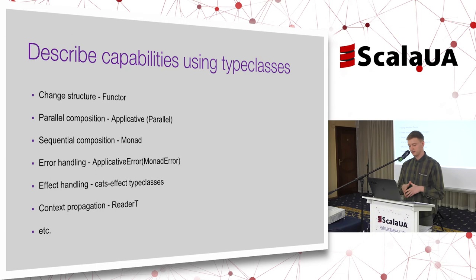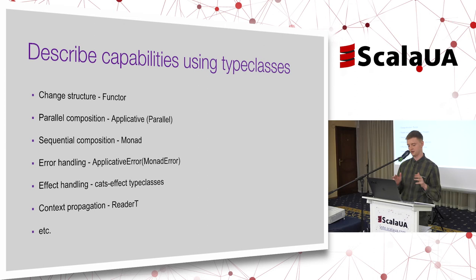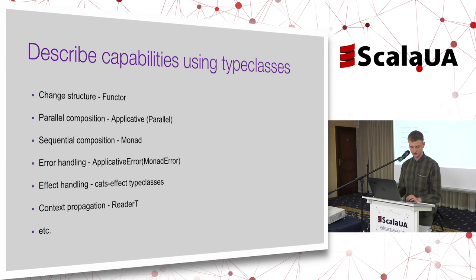There is also a dedicated library called cats-effect for effect handling. You can put your effect — meaning side effects, like writing to a database — inside F. cats-effect defines type classes for handling these effectful operations, so you can in a safe and guaranteed functional manner put side-effecting operations inside F. You can also use Reader for context propagation, and there are many more type classes in cats to describe other capabilities.